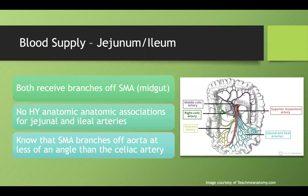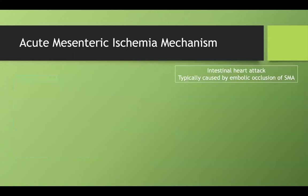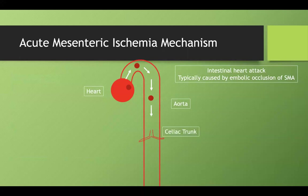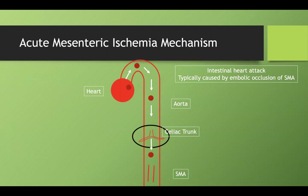The SMA branches off at less of an angle than the celiac artery, making it more prone to acute mesenteric ischemia. This is often caused by an embolic occlusion — a clot originates elsewhere, travels through systemic circulation, and because the celiac trunk is at a more exaggerated angle to the aorta, the clot often passes it and lodges in the SMA instead, which is at a less acute angle.